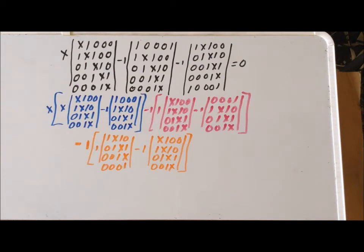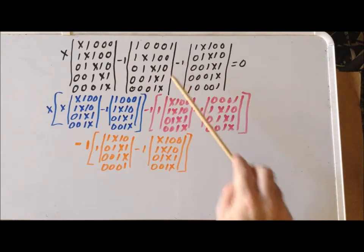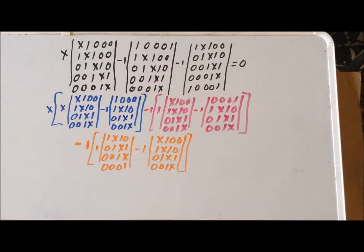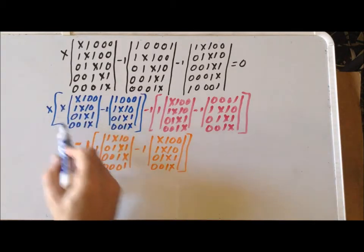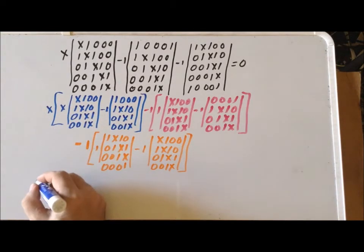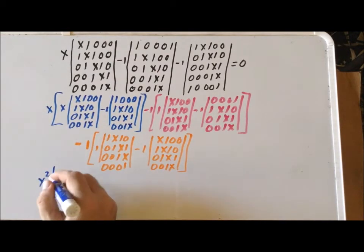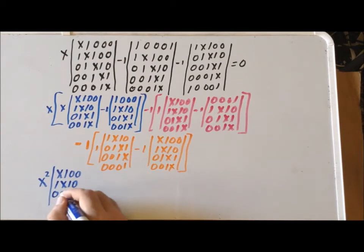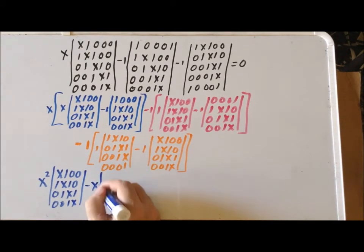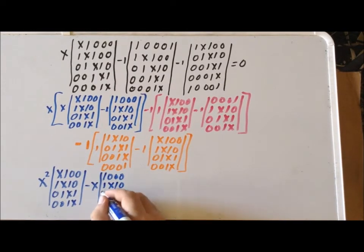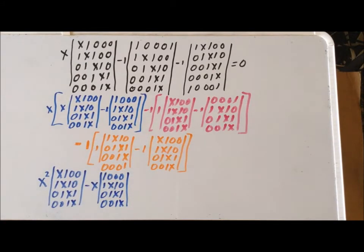In orange we have the decomposition related to the third 5x5 determinant. Now we are going to simplify and combine terms where possible, with color-coded corresponding terms.